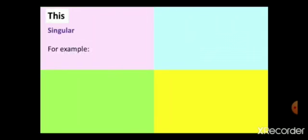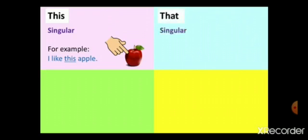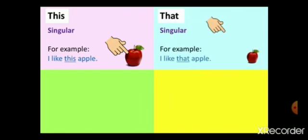'This' is a singular word — it means one thing. If you want to point out one thing that is close, we use 'this'. For example: 'I like this apple' — the apple is close, so we write 'I like this apple'. 'That' is also singular. When things are far away, we use 'that'. For example: 'I like that apple'. The things are close — use 'this'. Things are far away — use 'that'.